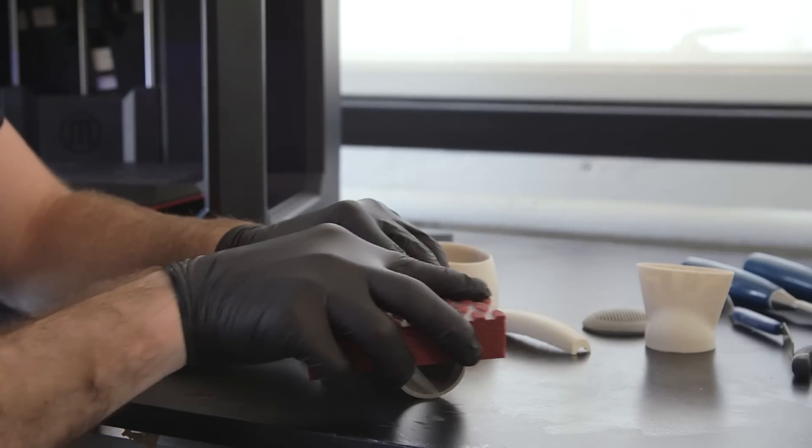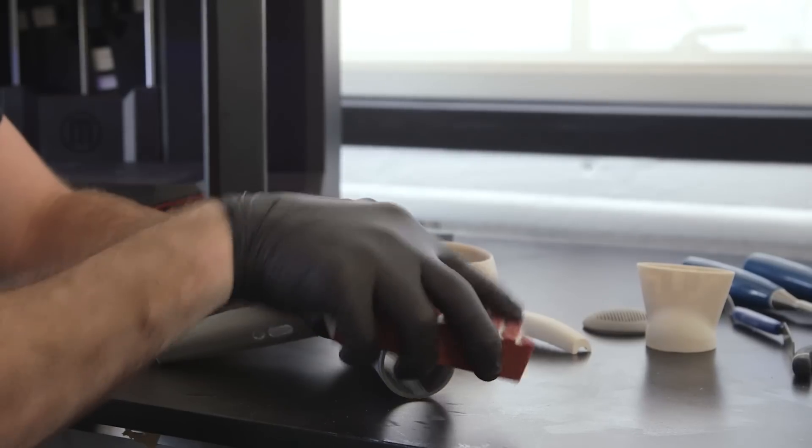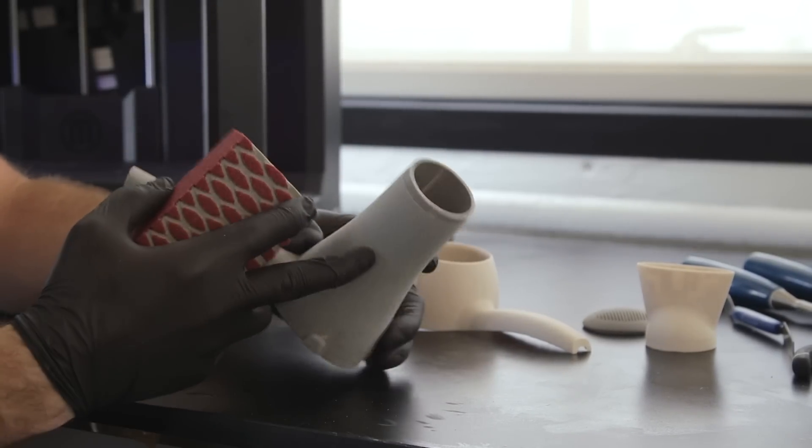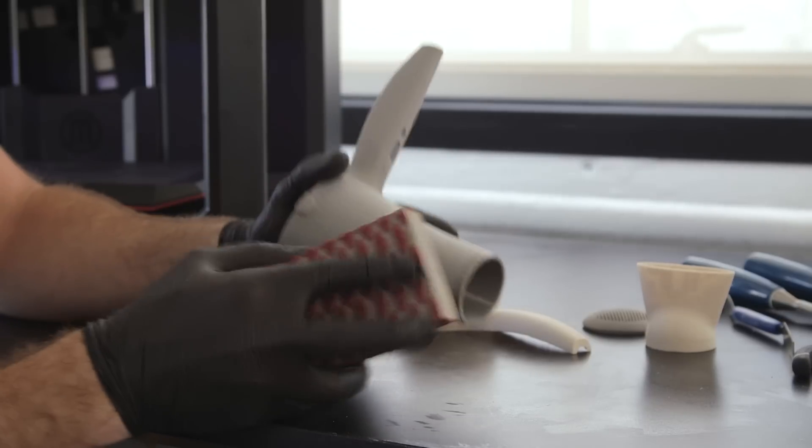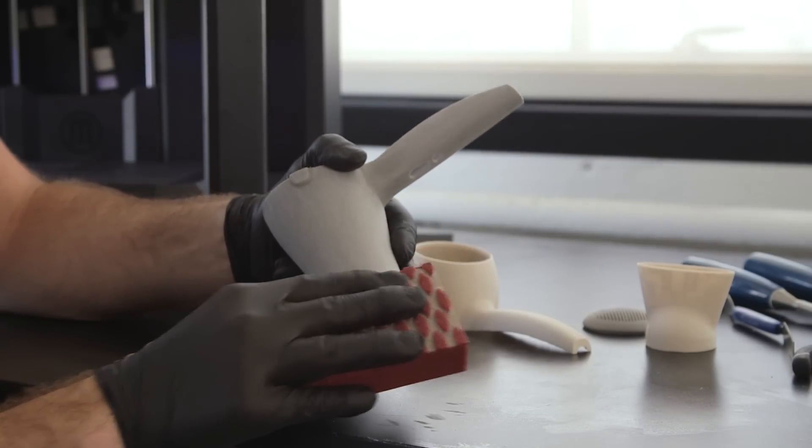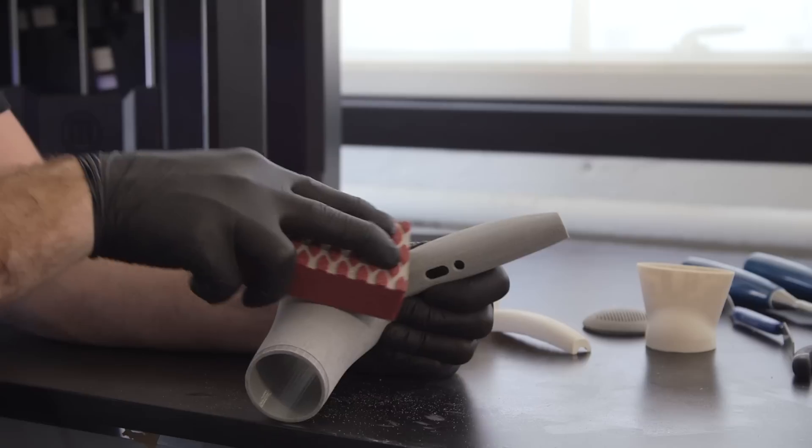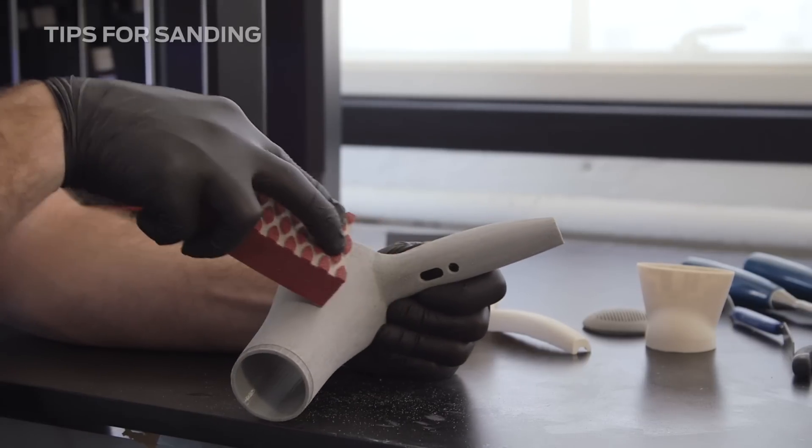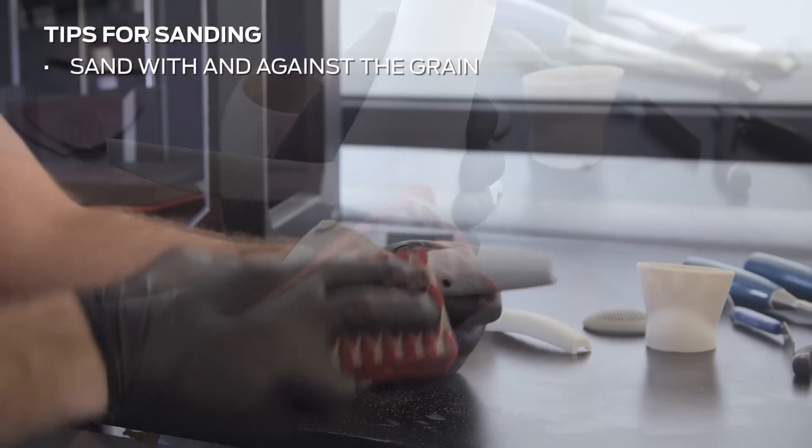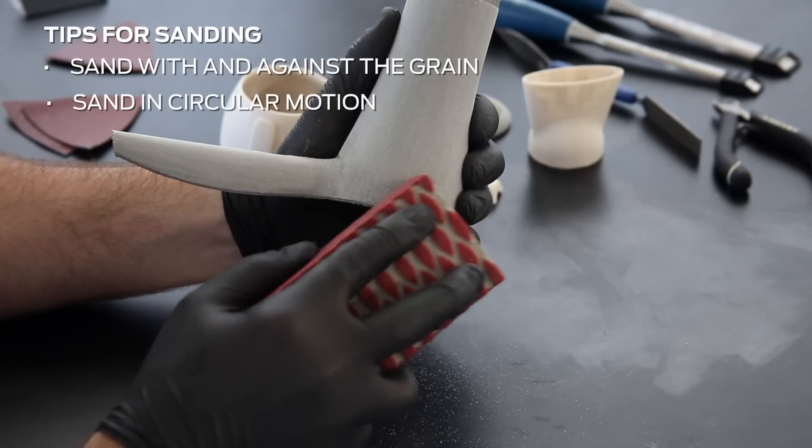Sanding curved surfaces and small features can be a challenge. Use smaller strips of sandpaper or electric sanders with different attachments to reduce sanding time. In tough areas, sand both with and against the grain, as well as in circular patterns.